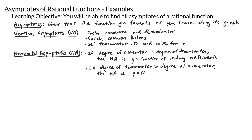Next, we have horizontal asymptotes, which we'll abbreviate with HA. To determine the horizontal asymptotes of a rational function, we want to think about its end behavior. If the degree of the numerator is the same as the degree of the denominator, the horizontal asymptote is y equals the fraction of the leading coefficients. However, if the degree of the denominator is larger than the degree of the numerator, the horizontal asymptote is y equals zero.